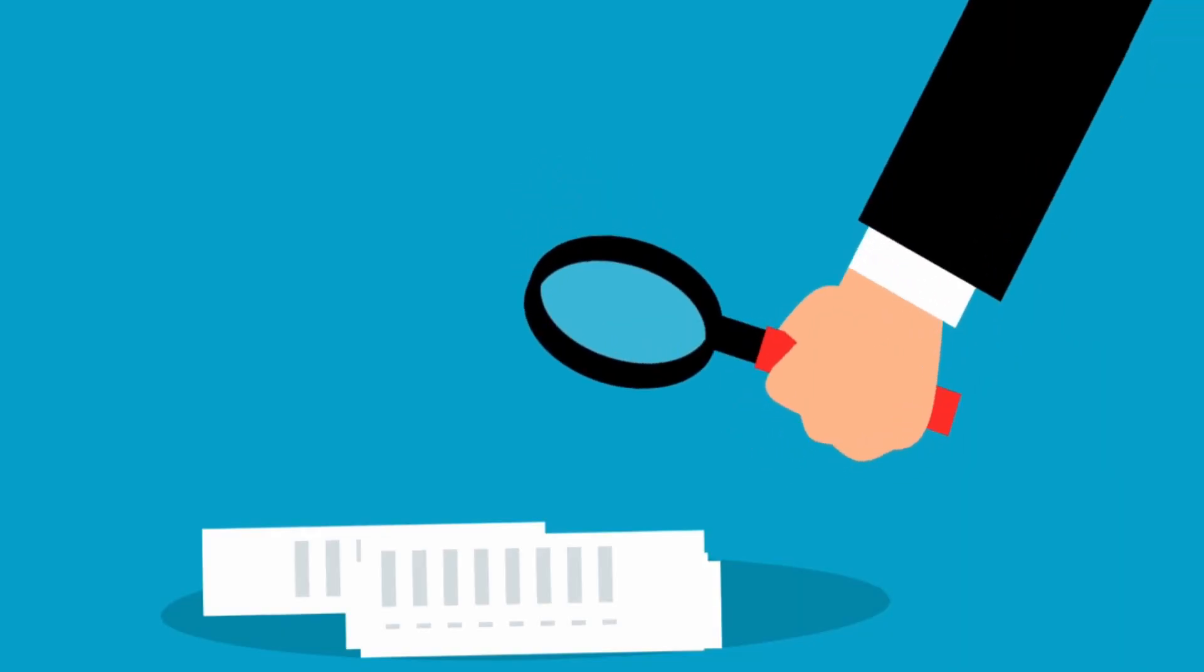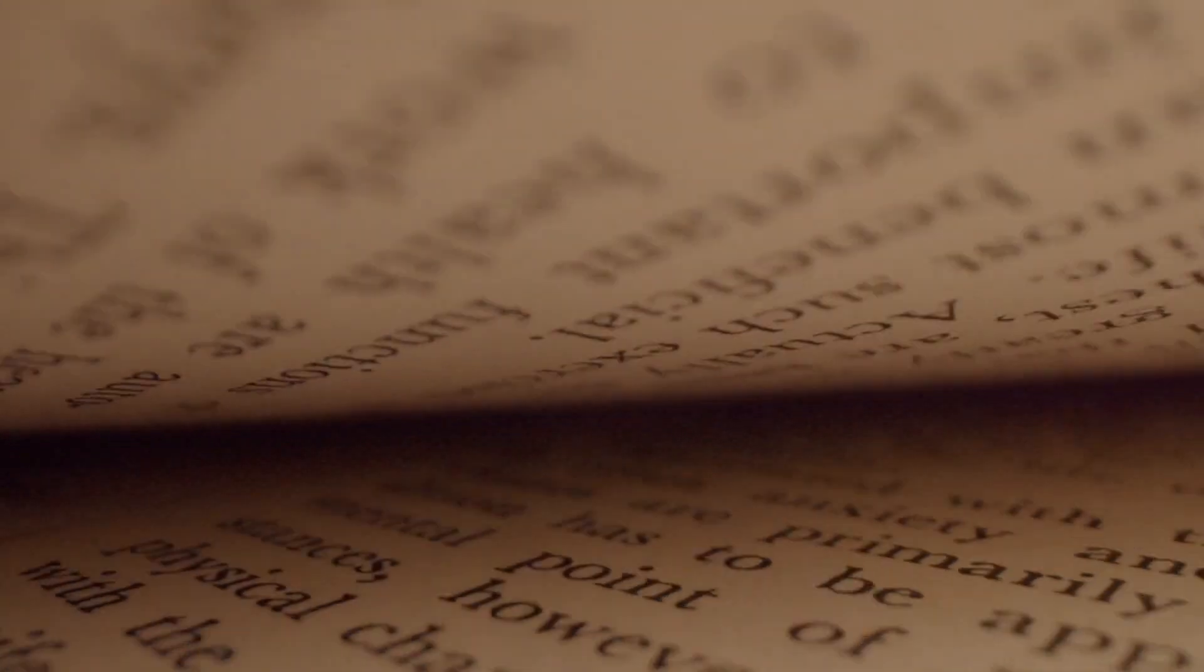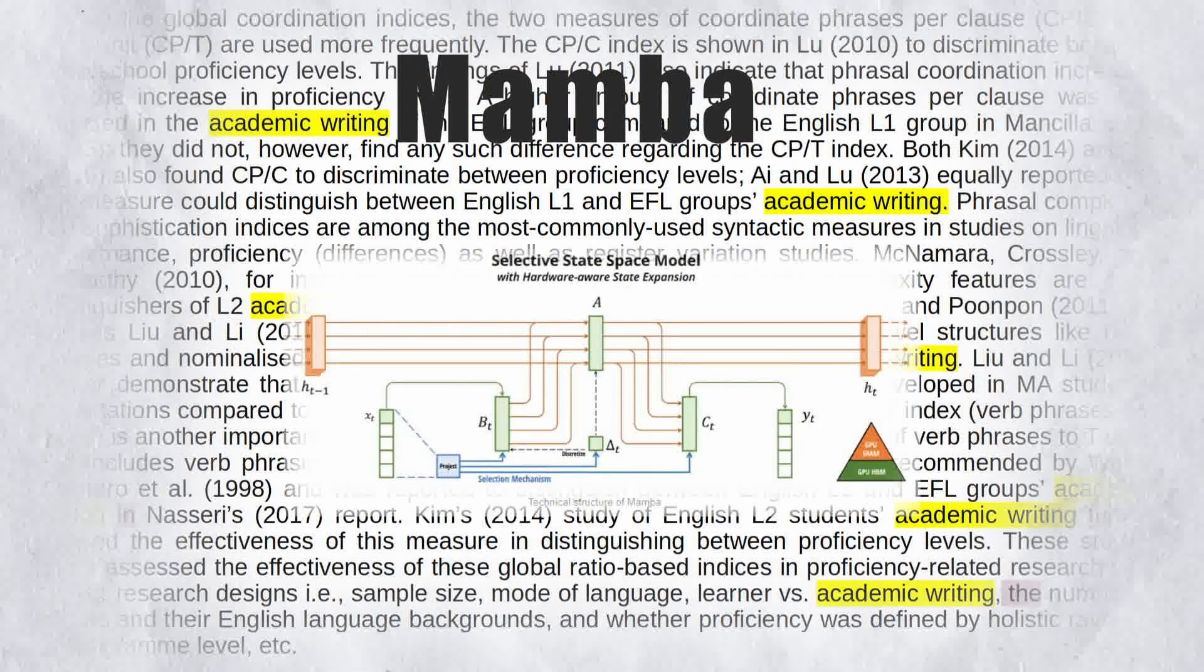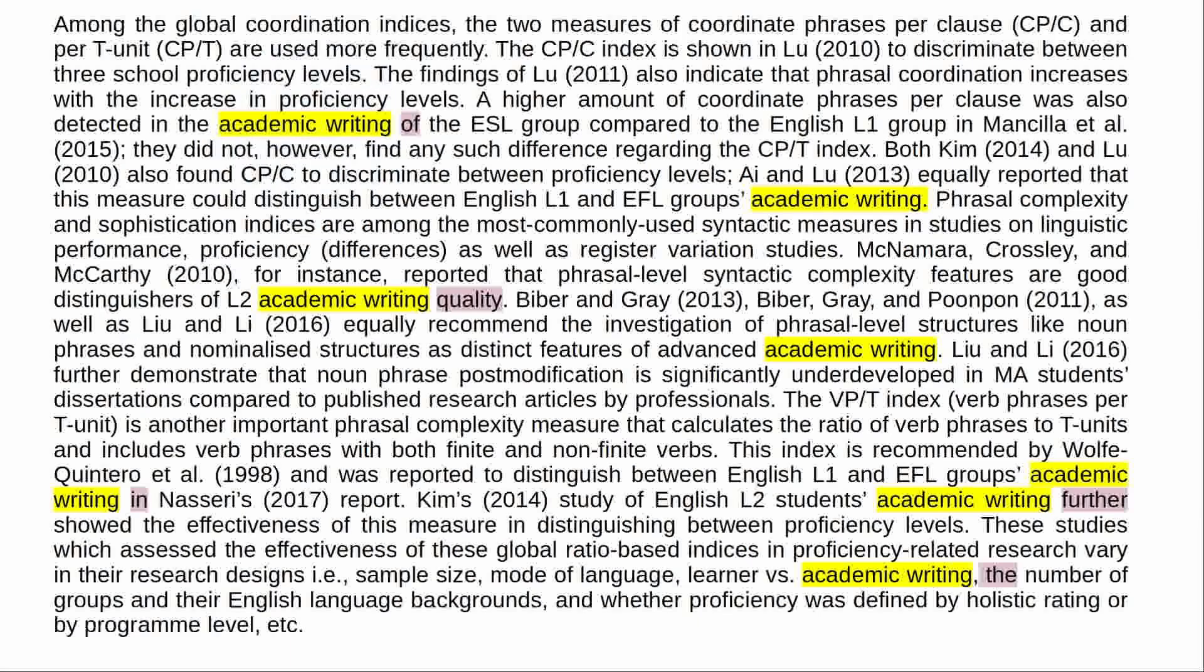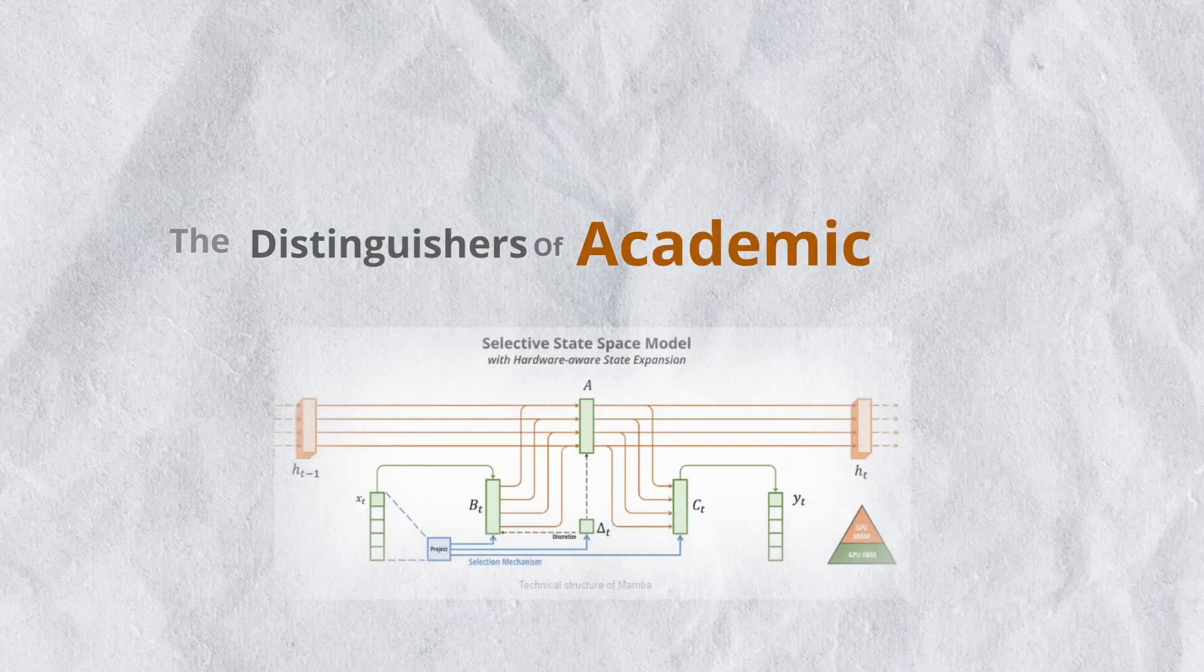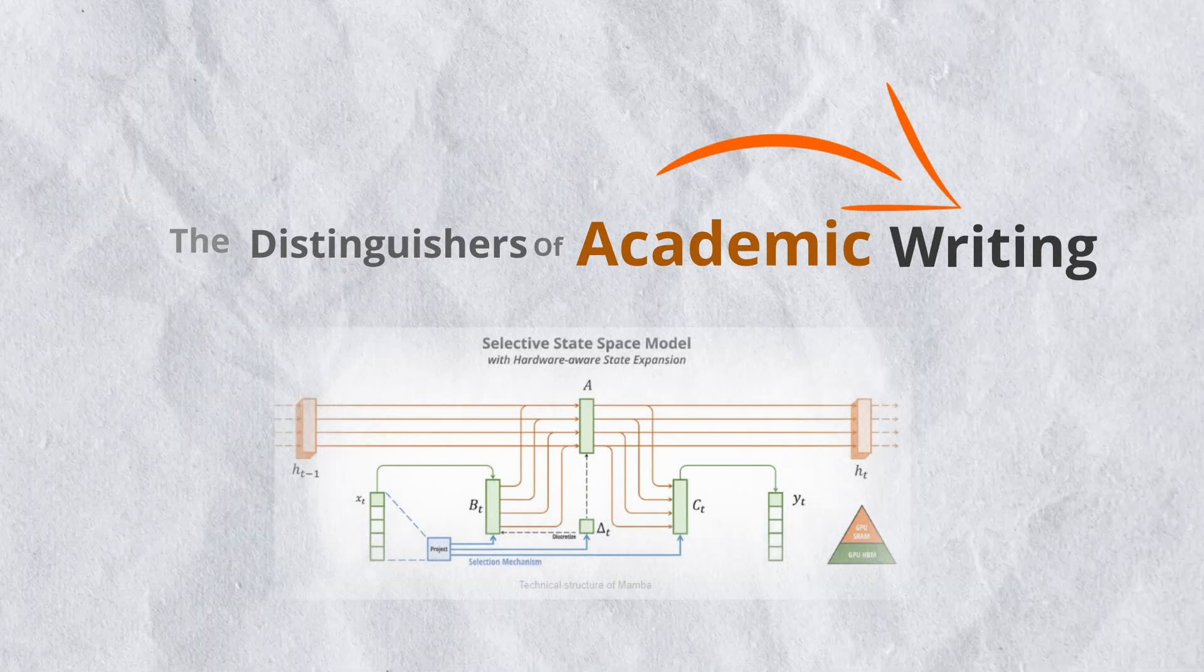As we will see soon, instead of using all the information, the Mamba architecture selectively focuses on some parts of the data, for example only some words that can help the model more accurately predict the next word.